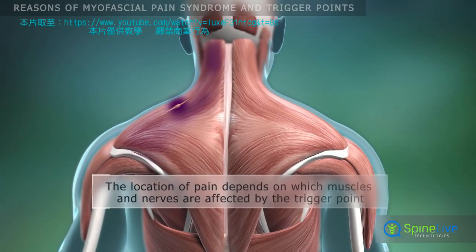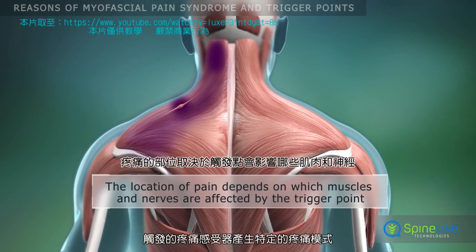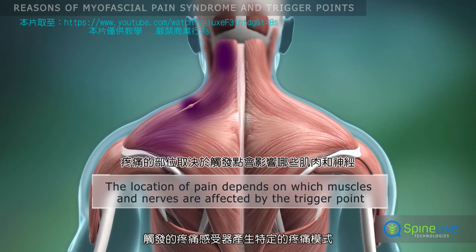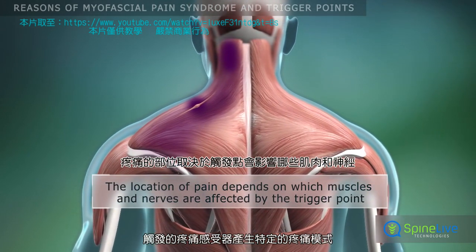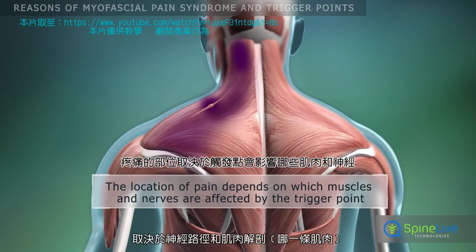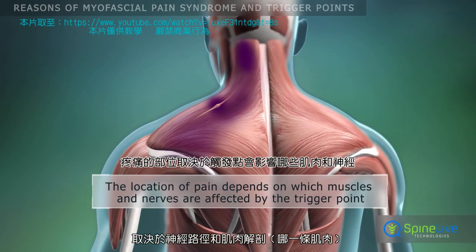Activated pain receptors generate specific preferred pain patterns depending on nerve passage and muscle anatomy.